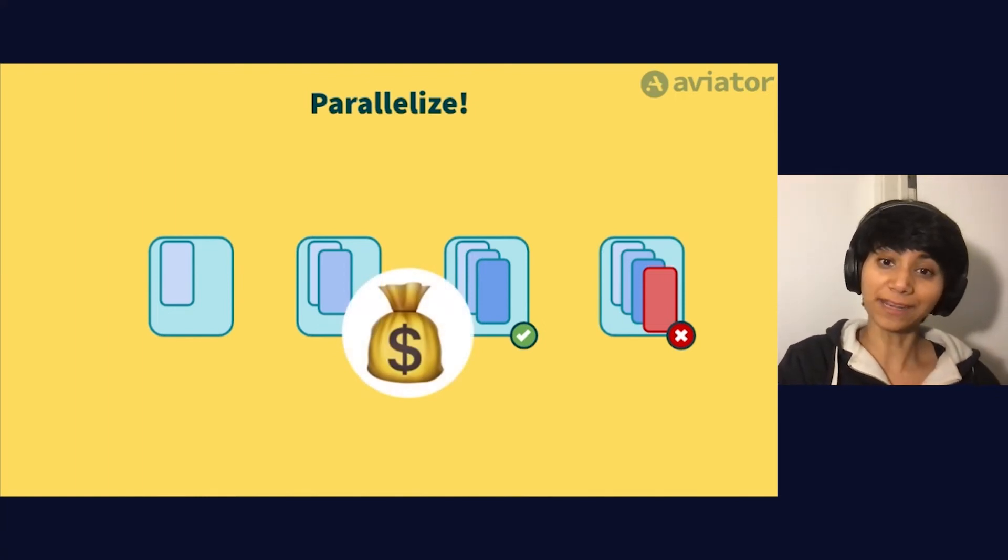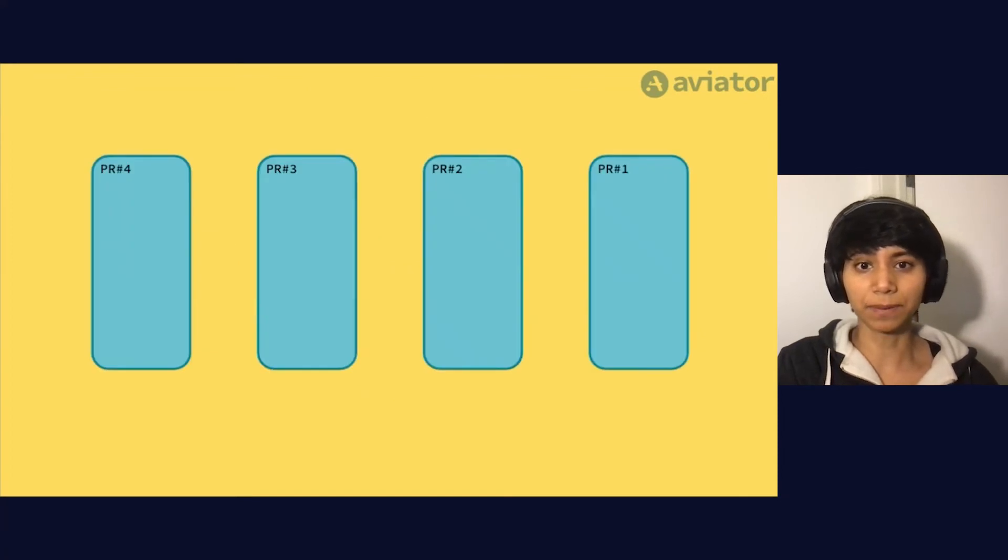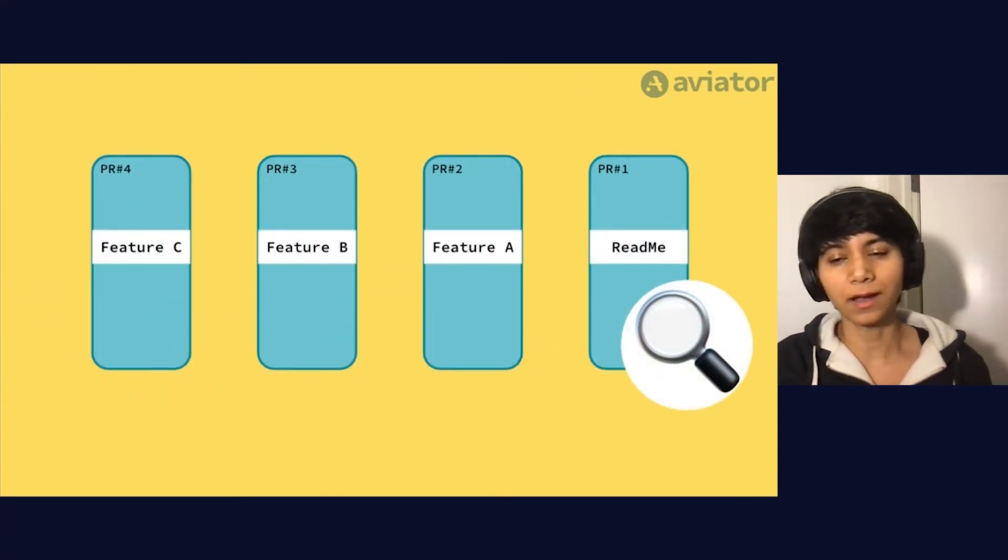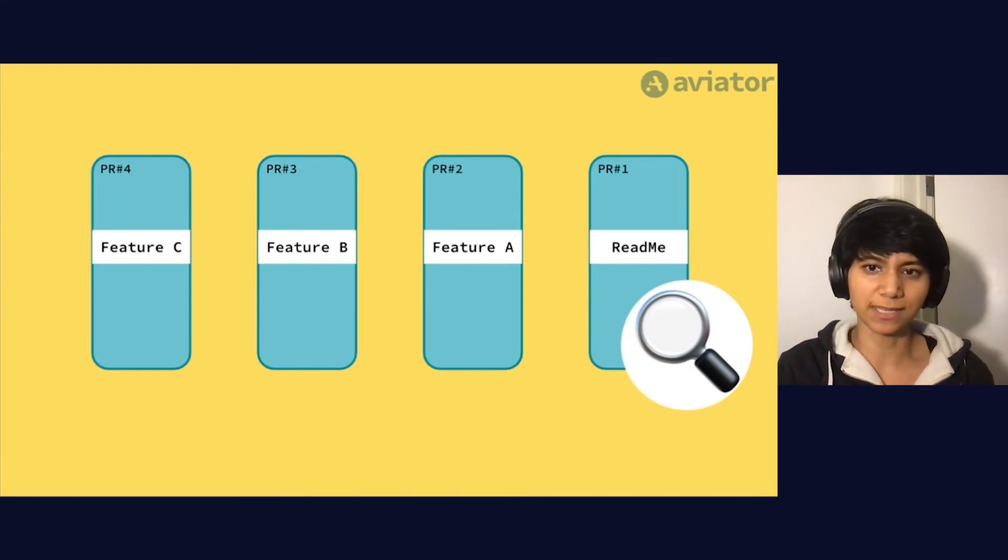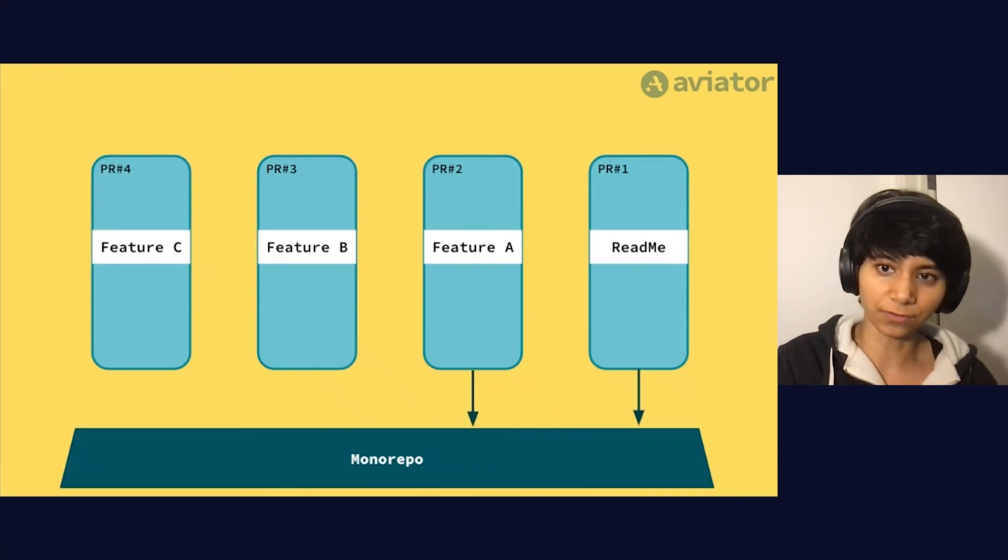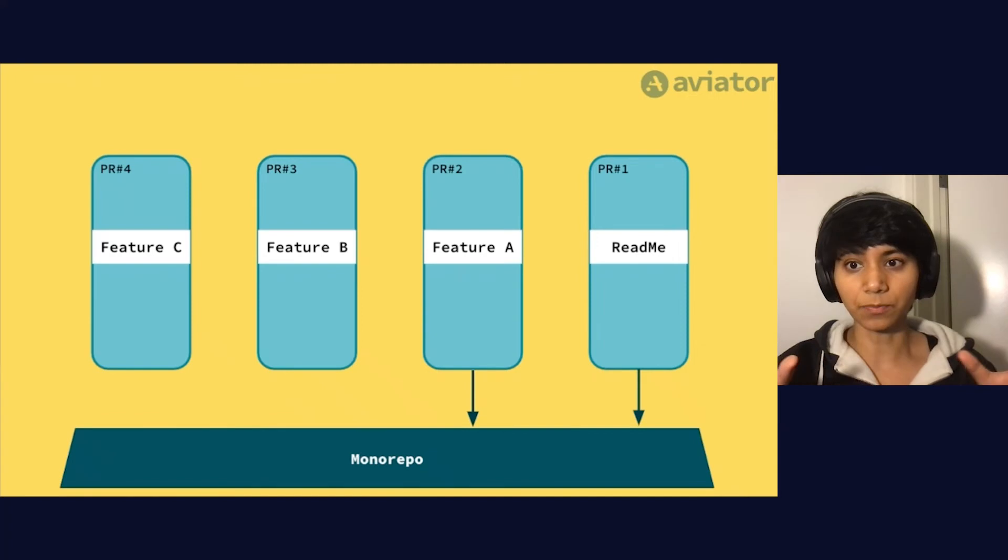So the final thing you could do is selectively parallelize depending on what's actually changed within these PRs. That way, if you've got a PR that only changes, say, a README file, you can merge that PR independently from a PR that adds a new feature, for example, in entirely separate queues.